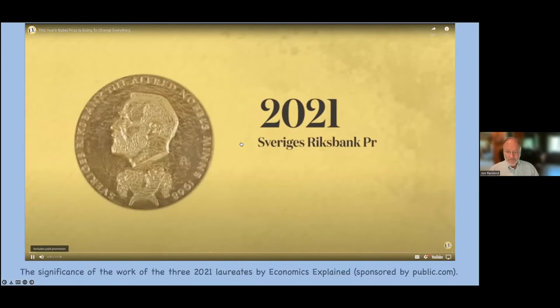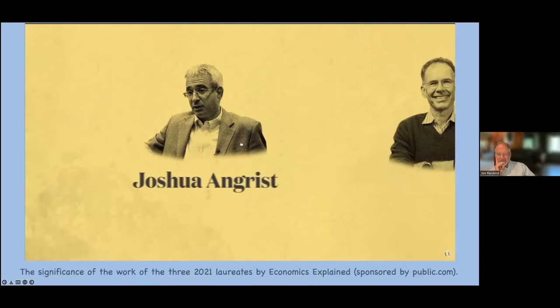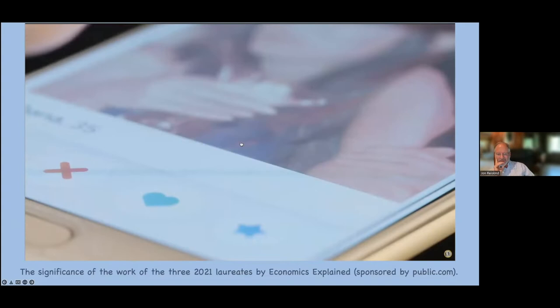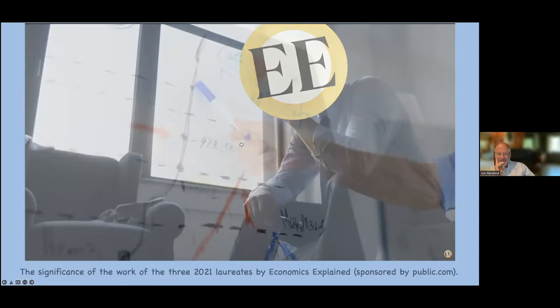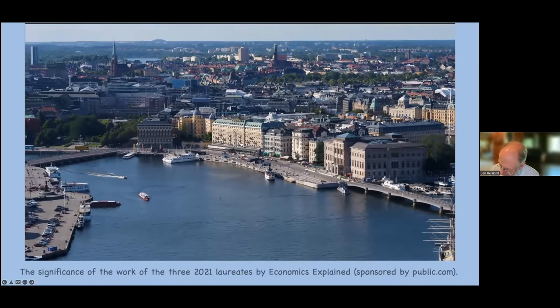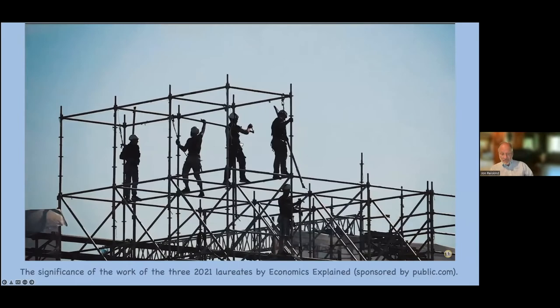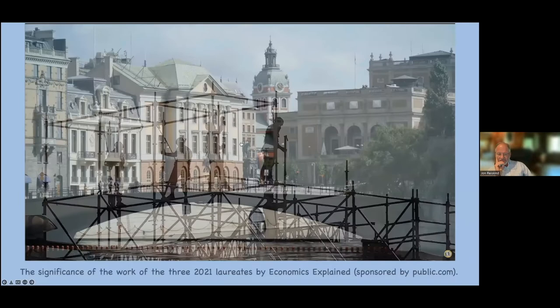The 2021 Sveriges Riksbank Prize in Economic Sciences was awarded to David Card for his empirical contributions to labor economics, and to Joshua Angrist and Guido Imbens for their methodological contributions to the analysis of causal relationships — not casual relationships. The fact that this year's was a joint prize with two groups recognized goes to show just how consequential their work has been. Labor economics impacts all of us directly, and this has never been more apparent than right now, in the midst of a global pandemic with countries trying to put their economies back on track.